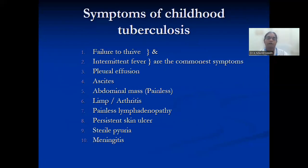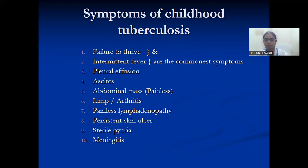Symptoms of childhood tuberculosis: the most important is failure to thrive — the mother will complain that the child is not gaining weight adequately — and intermittent fever. Sometimes there can be erythema nodosum as well. Pleural effusions, ascites because of abdominal disease, abdominal mass, lymphadenitis, cervical lymphadenopathy, painless skin ulcers, sterile pyuria, and meningitis are some of the symptoms related to childhood tuberculosis.